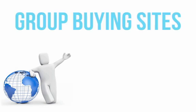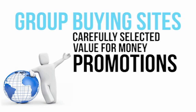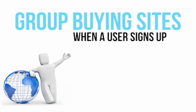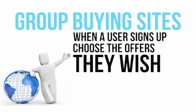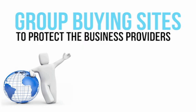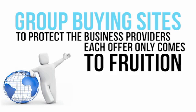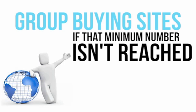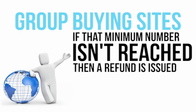Group buying sites are designed to deliver carefully selected value-for-money promotions to customers and site members. When a user signs up, they can choose the offers they wish to take advantage of, purchase those that appeal to them, and then receive a voucher or coupon to take to the business provider to redeem the offer. To protect the business providers and to ensure the offer is viable for them to deliver on, each offer only comes to fruition if it meets a minimum number of responses. If that minimum number isn't reached, then a refund is issued.